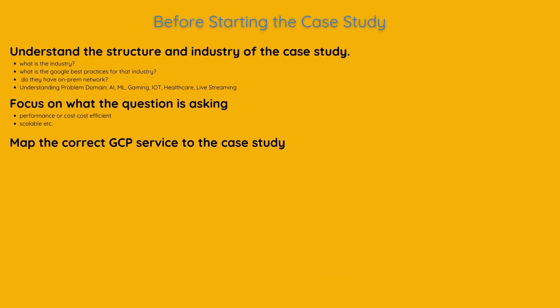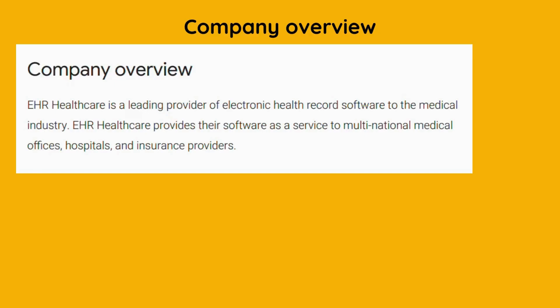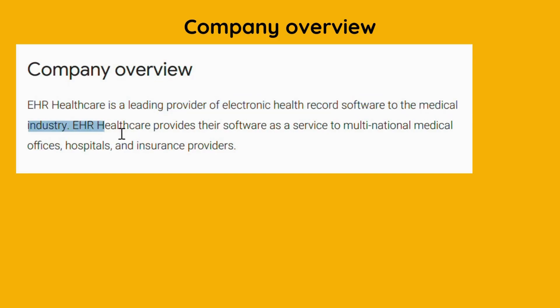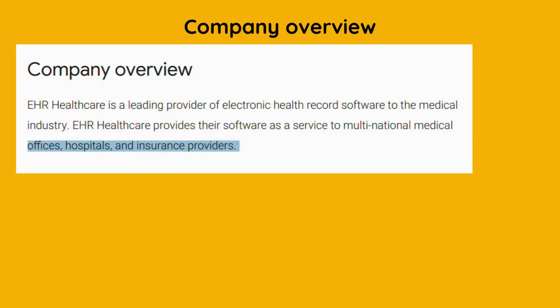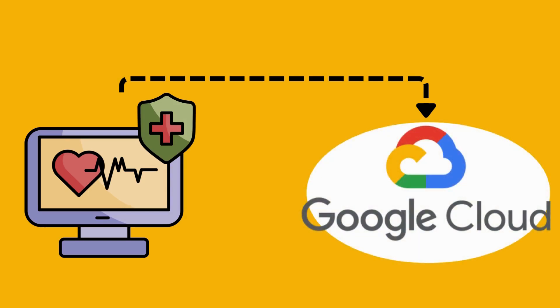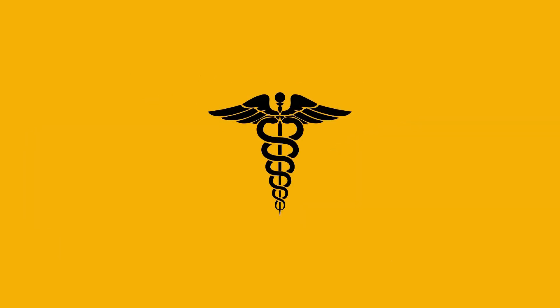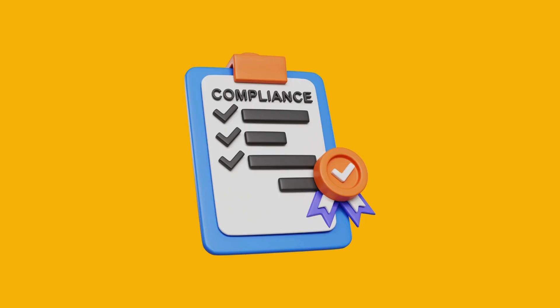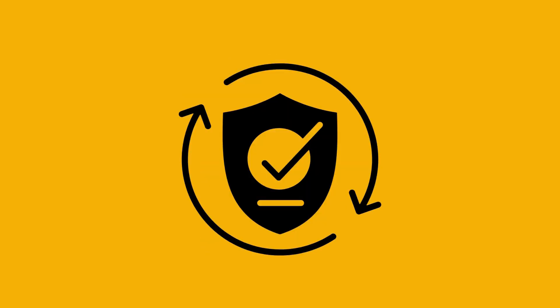Let's start with reading the company overview. EHR Healthcare is a leading provider of electronic health record software to the medical industry. EHR Healthcare provides their software as a service to multinational medical offices, hospitals and insurance providers. EHR Healthcare wants to modernise its electronic health record system by moving it to Google Cloud, aiming to improve performance, security and scalability while ensuring compliance with healthcare regulations. Since this case study is about the healthcare industry, the first things that come to mind are compliance and data security.